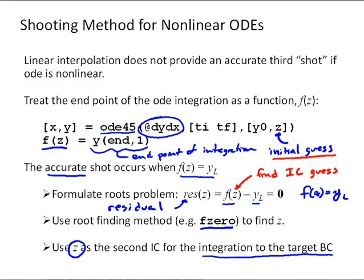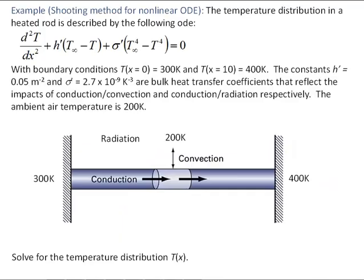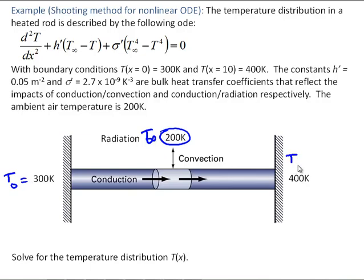Let's look at how this works with an example. Here's a nonlinear boundary value problem to solve for the temperature distribution in a heated rod. The temperature distribution is described by the differential equation: the second derivative of temperature with respect to x, plus h-prime times (T_infinity minus T), plus sigma-prime times (T_infinity to the fourth minus T to the fourth), equals zero. T_infinity is the ambient temperature — 200 Kelvin. The left-hand side boundary condition is T_0 equals 300 Kelvin, and the right-hand side boundary condition is T_L equals 400 Kelvin at x equals 10.